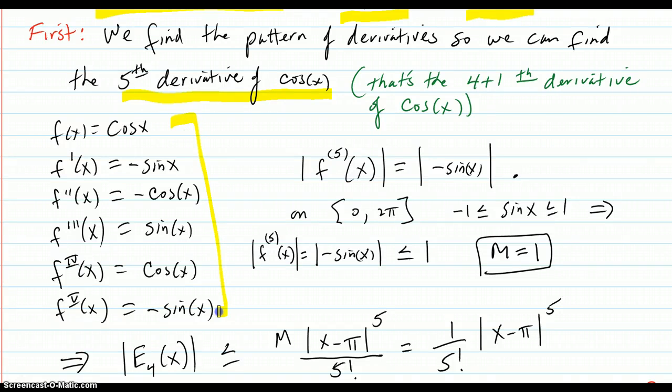Here's your derivatives. We could write down some kind of pattern, but the main thing is that the fifth derivative is negative sine. On zero to 2π, we already know that sine x is always trapped between negative one and one.